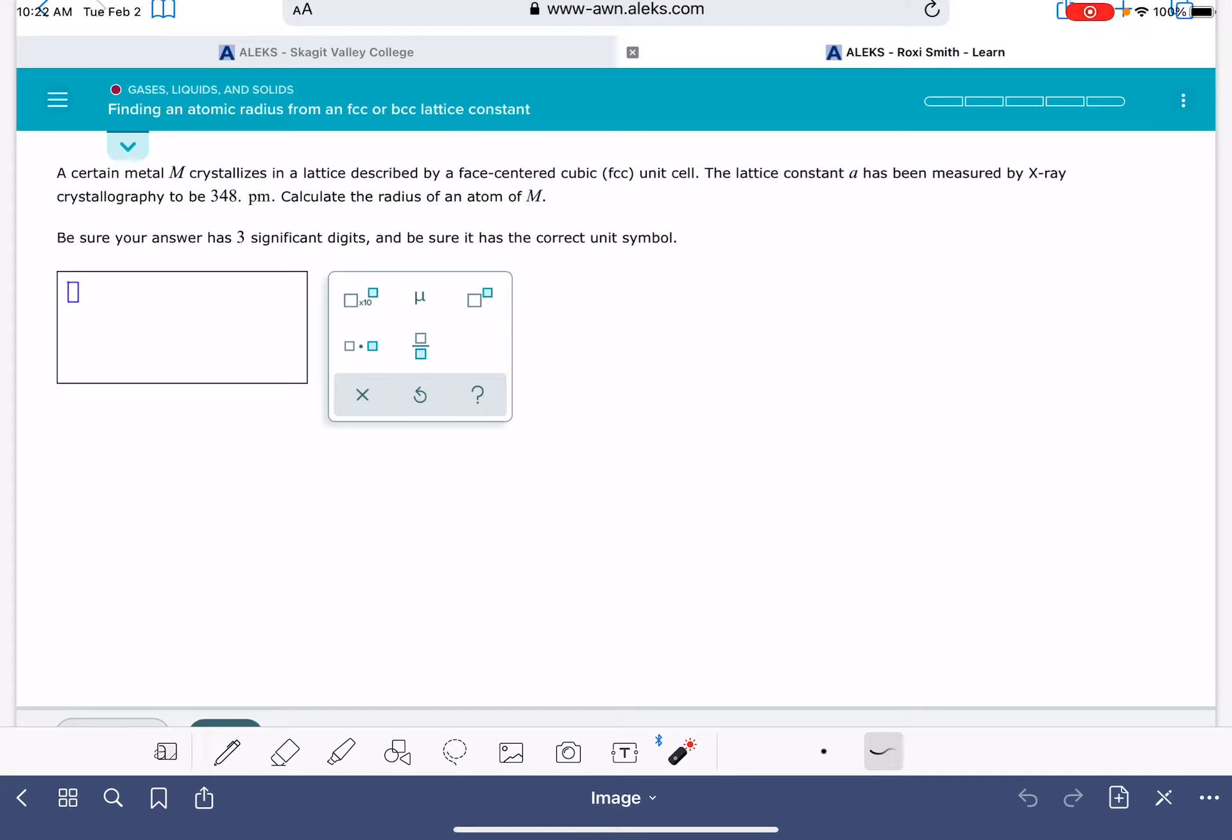This equation, the equation that we use, is going to depend on if we have an FCC or BCC cubic unit cell. For FCC, the equation that we're going to be using is little a equals the square root of 8 times the radius r. And if we have a body-centered cubic cell, then the equation that we'll use is little a equals 4 times the radius r over the square root of 3.